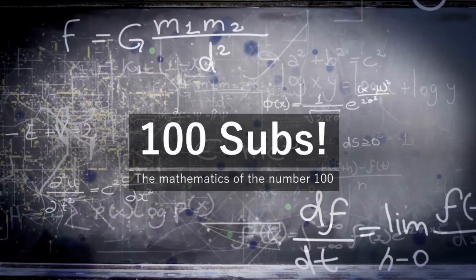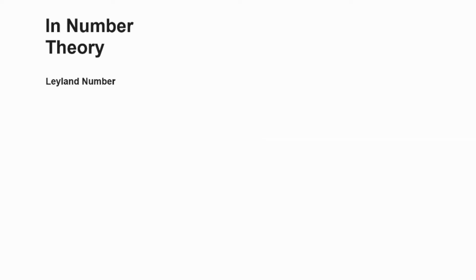For example, in number theory 100 is what's called a Leyland number, and Leyland numbers are any number that conforms to this pattern: x to the y plus y to the x. In the case of 100, this is 2 to the sixth power plus 6 squared, which equals 100.